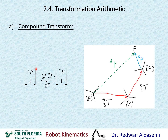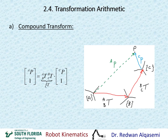P relative to A — as a four by one vector — equals T of B relative to A, times T of C relative to B, times the vector P relative to C with a one appended to make it four by one.